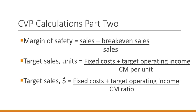You make one adjustment to the breakeven formulas: add target operating income in the numerator. For target sales in units, the numerator is fixed costs plus target operating income, divided by contribution margin per unit. In dollars, fixed costs plus target operating income divided by the contribution margin ratio gives target sales in dollars. You can also use the same shortcut we saw with breakeven sales in dollars.